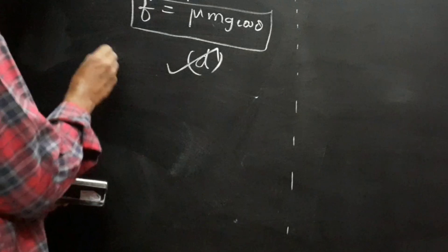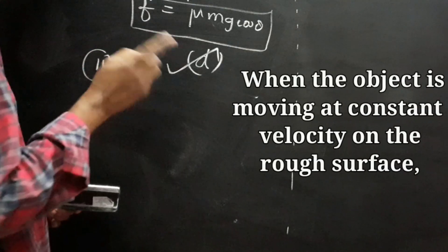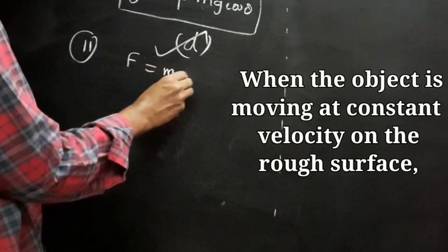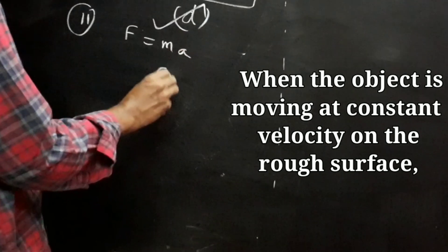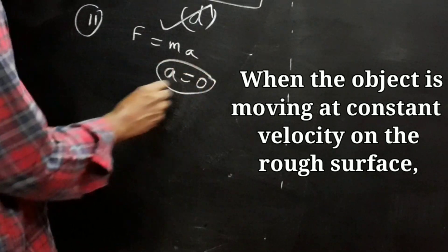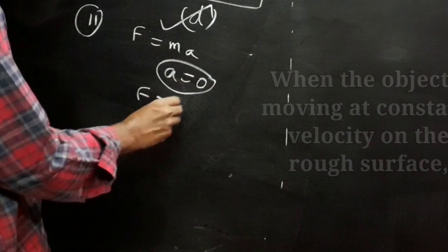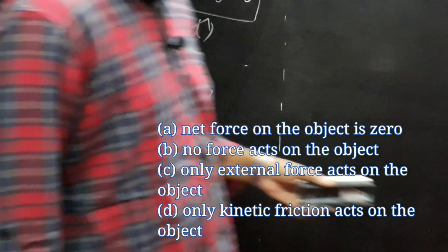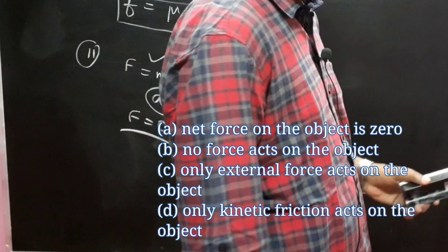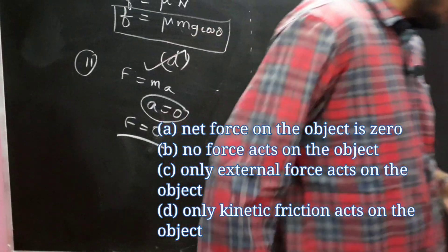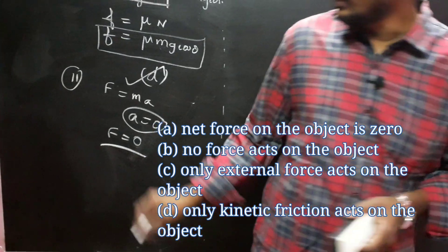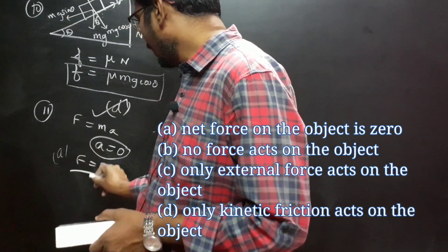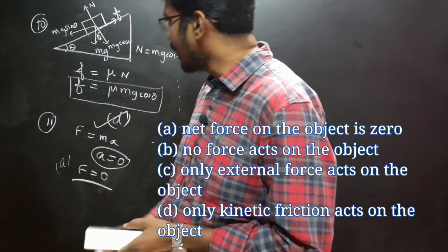Question 11: A body moving at constant velocity — acceleration is automatically zero, so net force is zero. The answer is option A.